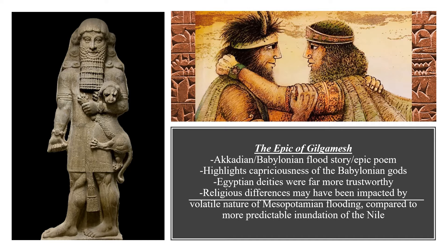Perhaps the best example of the capriciousness of the Babylonian gods and goddesses and the overall nihilism of Babylonian spirituality can be seen in the Epic of Gilgamesh — a tale we discussed briefly in a previous lecture that may have been based on the exploits of the Akkadian ruler Sargon the Great. Here's a brief recap of the Epic of Gilgamesh.